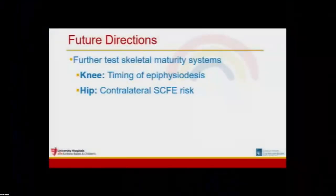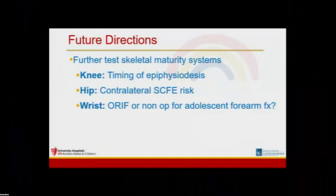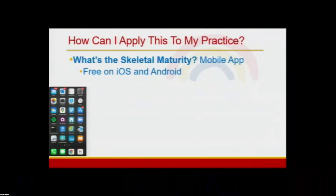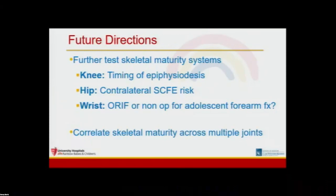We're in the process of further testing our skeletal maturity systems to evaluate clinical problems. We want to prove that our knee system allows for more accurate timing of epiphysiodesis. Using our recently developed hip skeletal maturity system, we are building a risk prediction model for contralateral slipped capital femoral epiphysis. And we're using a brand new wrist skeletal maturity system to better stratify the need for operative intervention in adolescents with forearm fractures. We're also conducting a study correlating skeletal maturity across multiple joints to determine if skeletal maturity is global or joint-specific, which would have implications on what radiographs we use for particular clinical problems.